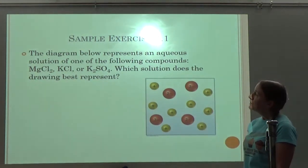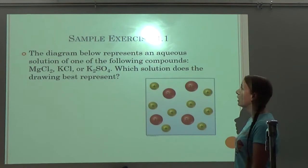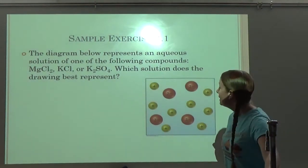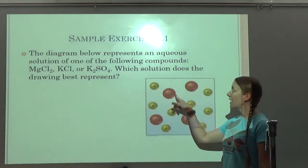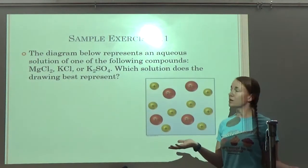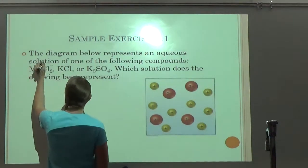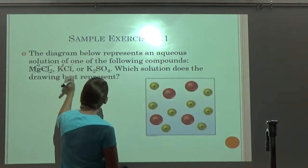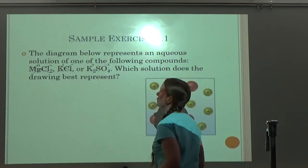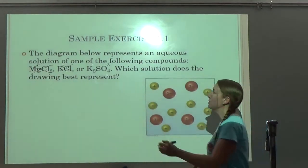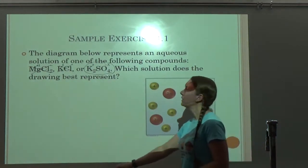The diagram below represents an aqueous solution of one of the following compounds: MgCl₂, KCl, or K₂SO₄. I can see I have positive ions with a +1 charge and negative ions with a -2 charge. Magnesium is +2 and chloride is -1, so it shouldn't be MgCl₂. K is +1 and chloride is -1, so it shouldn't be KCl. K is +1 and sulfate SO₄ is -2, so it makes the most sense that this would be K₂SO₄ because of the charges on the ions.